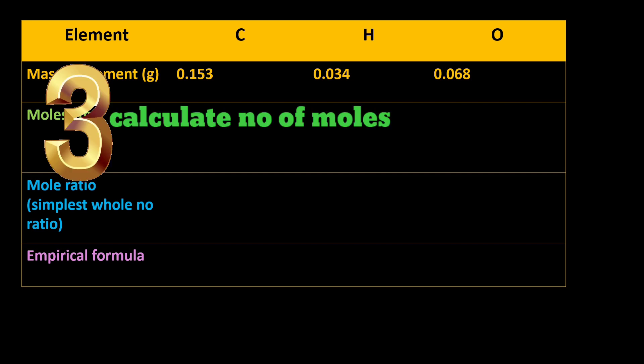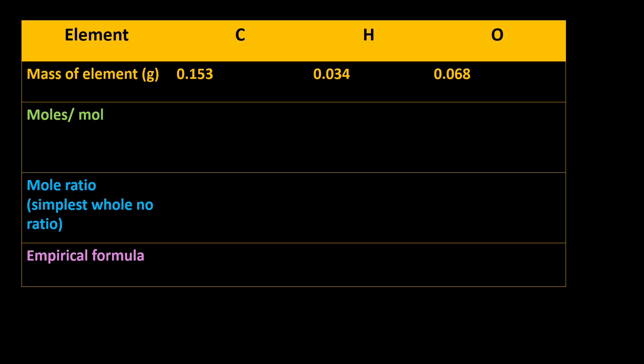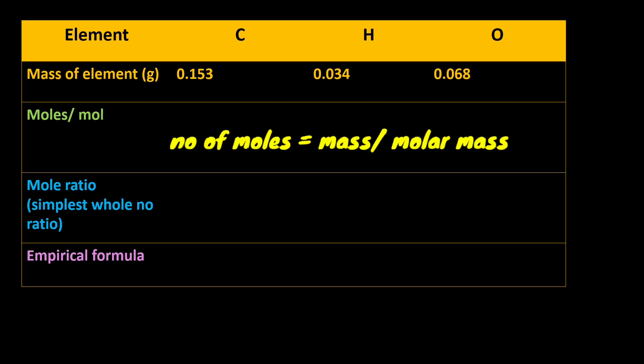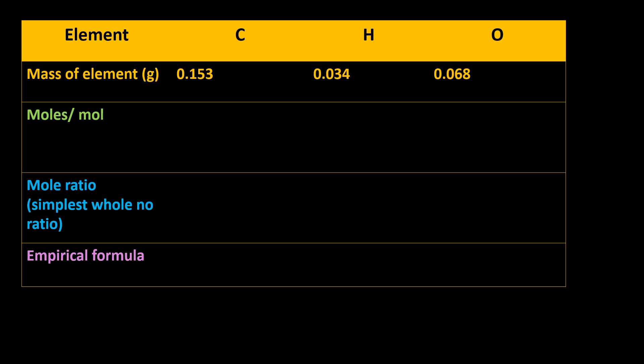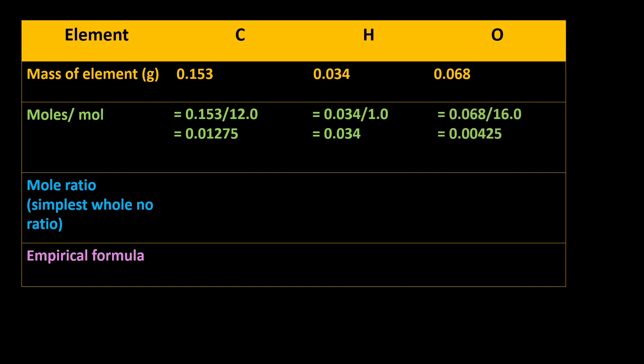Step 3: calculate the moles of each element using moles = mass ÷ molar mass. For carbon: 0.153 ÷ 12 g/mol = 0.01275 moles. For hydrogen: 0.034 ÷ 1 g/mol = 0.034 moles. For oxygen: 0.068 ÷ 16 g/mol = 0.00425 moles.